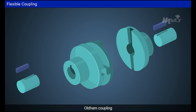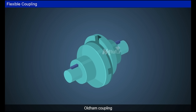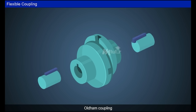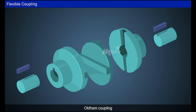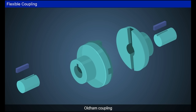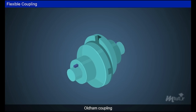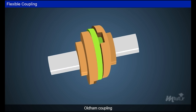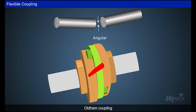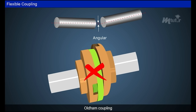Here comes the Oldham coupling, where no rubber bush is used. In Oldham's coupling, a center disc with a protruding surface is used to fit two internally grooved flanges connected to the shafts, through which power is transmitted. However, this coupling is not suitable for transmitting power between angular shafts.